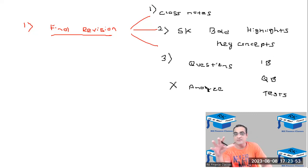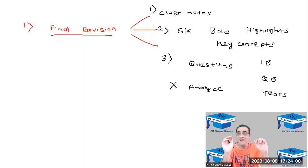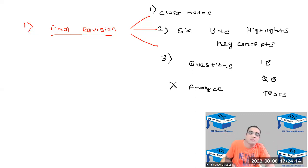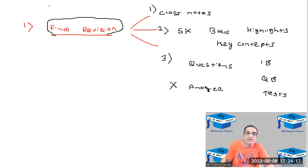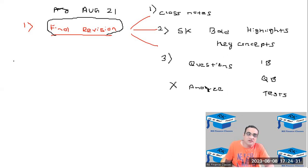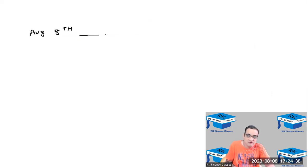Do this on a daily basis — make a timetable for yourself and try to finish this final revision at least three to four days before the exam. Assuming your exam is around the 22nd or 25th, I would stop the final revision by August 20 or 21. From today, August 8th, till around August 20 or 21, we have around 13 days.